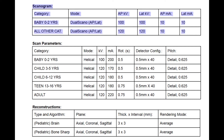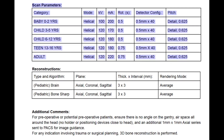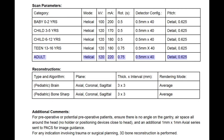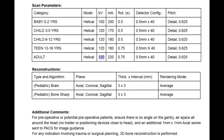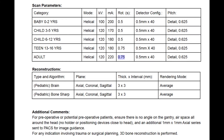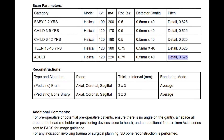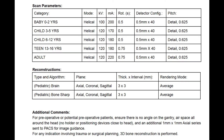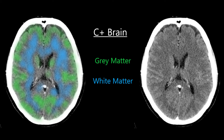Moving on to the technical factors, we have our exposure parameters for the scout images and then the actual scan parameters for the adult scan. For this protocol we're acquiring data in a helical scan with a tube voltage of 120 kV, tube current of 220 mA, rotation time of 0.75 seconds per rotation, and a pitch of 0.625 — described on our scanner as the detail pitch setting. For a CT brain, radiation dose is relatively high compared to many other scans because we need to keep noise to a minimum to differentiate grey matter from white matter, which are very close in density. We need minimal noise to maximize contrast resolution and get good grey-white differentiation.